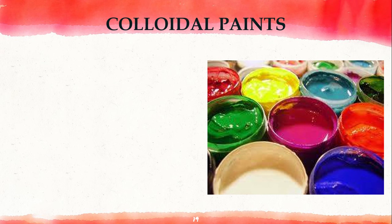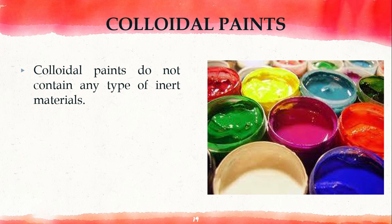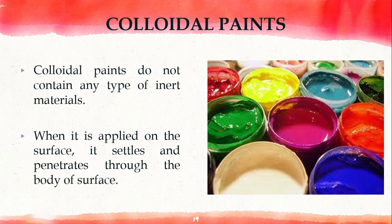Next are colloidal paints. Colloidal paints do not contain any type of inert material. They take a long period to settle due to their colloidal properties. When applied on the surface, the paint settles and penetrates through the body of the surface.